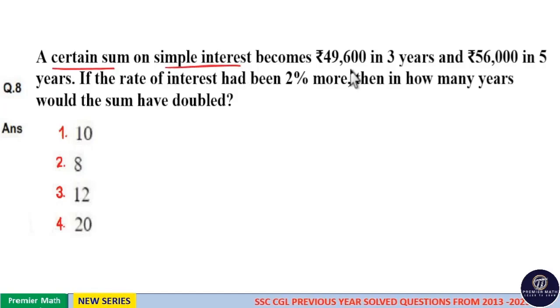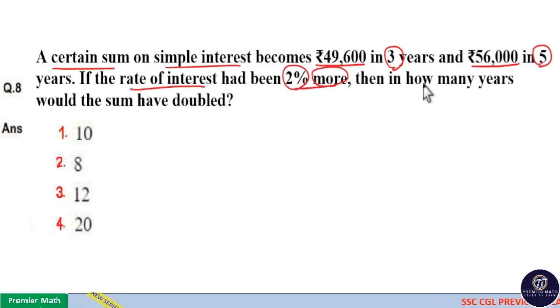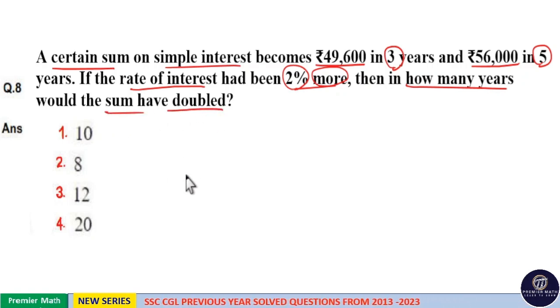A certain sum on simple interest becomes ₹49,600 in 3 years and ₹56,000 in 5 years. If the rate of interest had been 2% more, then in how many years would the sum have doubled?